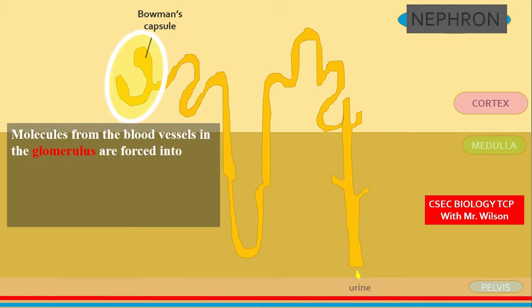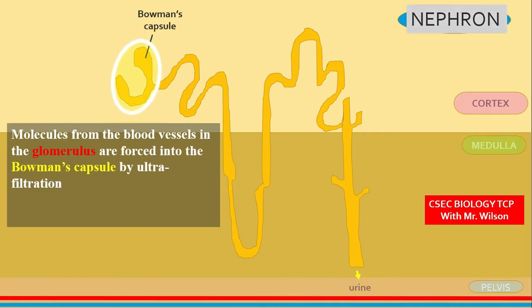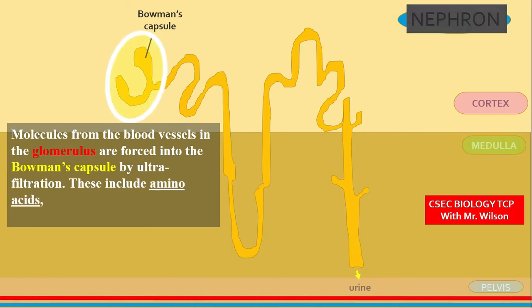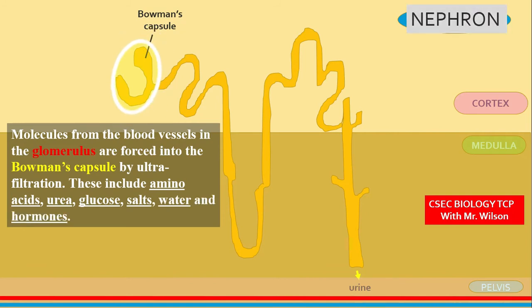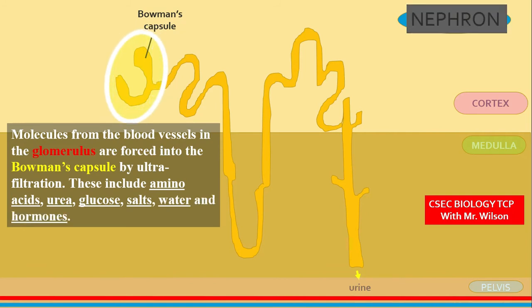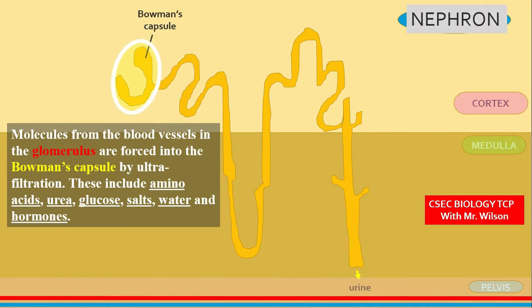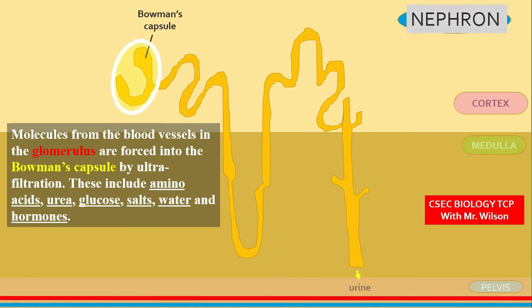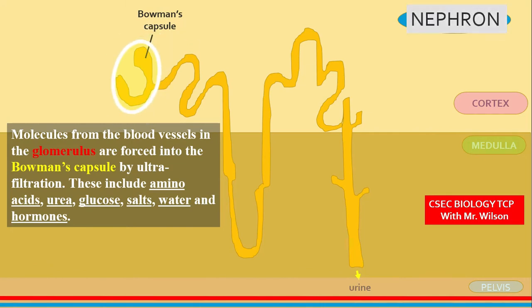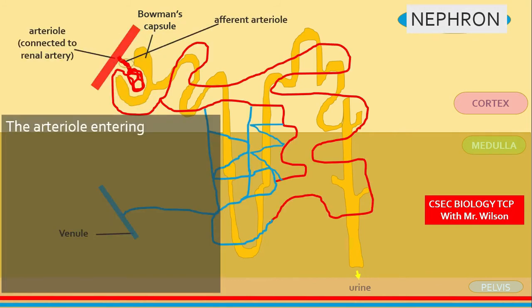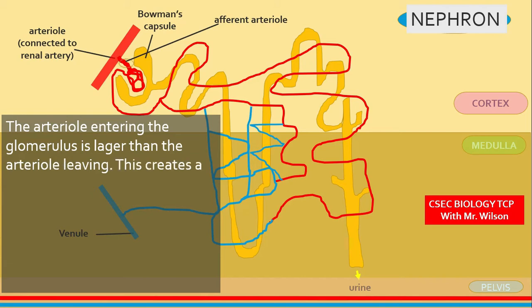The Bowman's capsule is a major part of the nephron as molecules from the blood vessels in the glomerulus are forced into the Bowman's capsule by ultrafiltration. The molecules forced across the membrane include amino acids, urea, glucose, salts, water, and hormones.